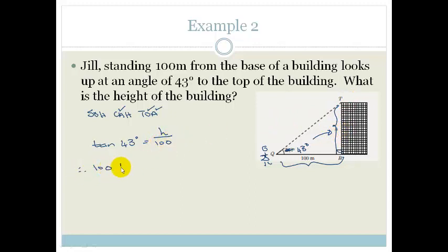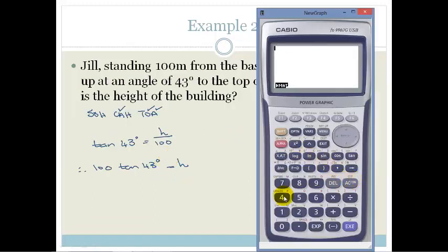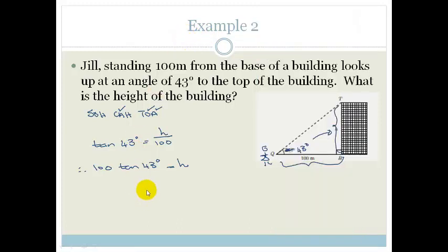And again, we're just going to pop out the calculator, and we're going to go 100 times tan of 43. And we see it's 93.251, which just rounds down to 93.25. So therefore, the height of the building is 93.25 meters.